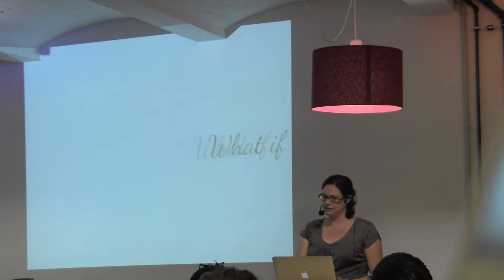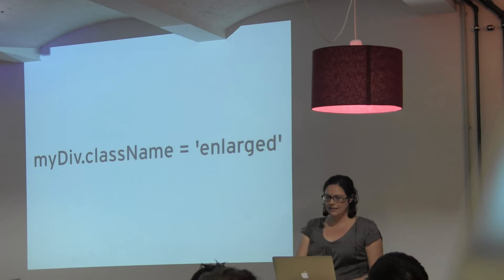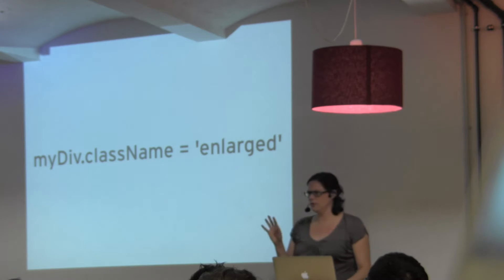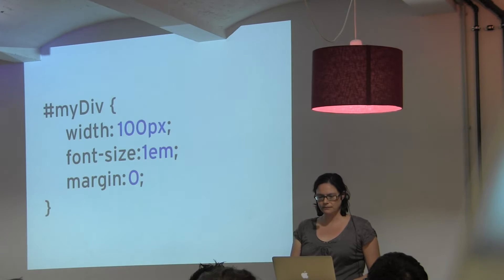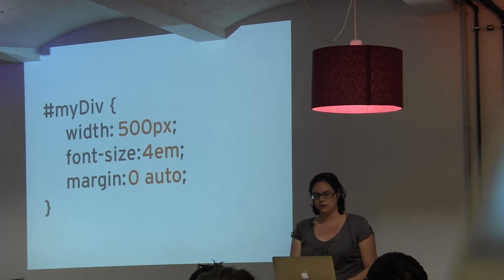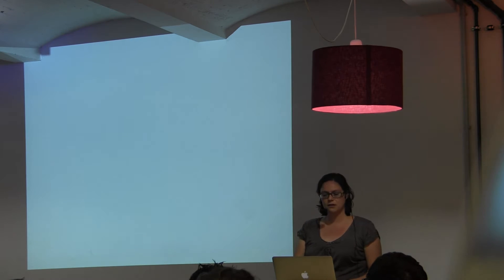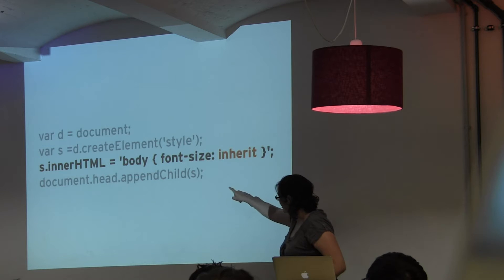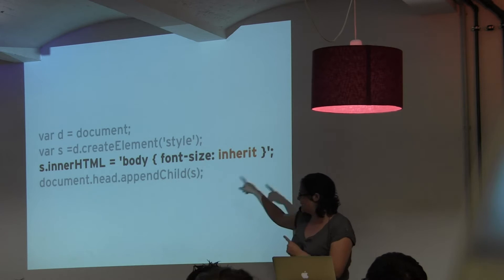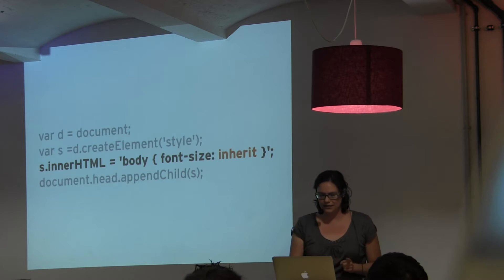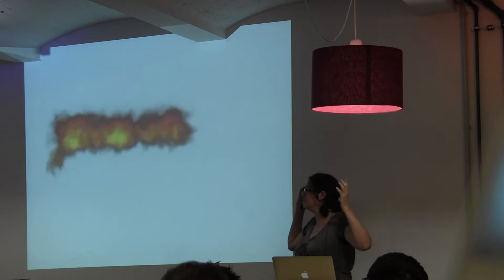What if, instead of adding and removing class names on an element, which we normally do with jQuery, you could change the existing rules directly? What if, instead of trying to override styles by adding a new style sheet and setting its innerHTML to a bunch of CSS and then adding that to the document, you could just remove the styles entirely?